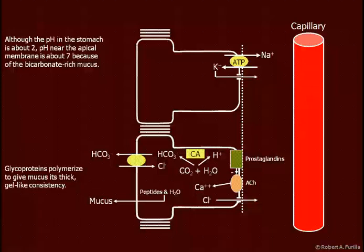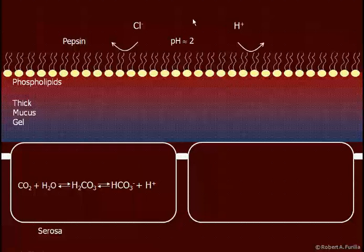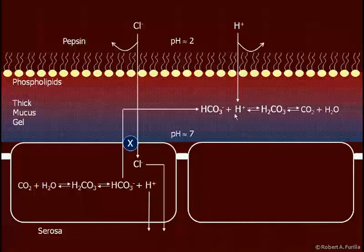The glycoprotein polymerizes into this very thick, gel-like mucus. It needs to be very thick and adhere to the apical membrane to keep from being washed away by stomach activity. Attached to the luminal side of the mucus layer are lots of phospholipids, many bound to glycoproteins so that the hydrophobic ends face the lumen. The pH in the lumen is about 2; chloride and hydrogen ions are inhibited from entering the gel-like substance by this hydrophobic barrier.